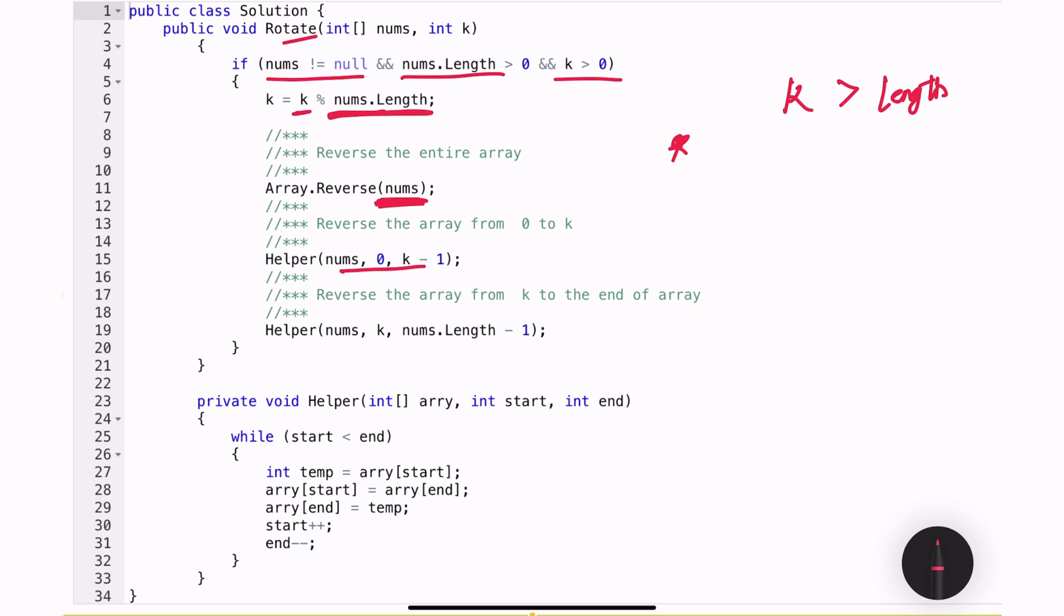After the complete array is reversed, the next step is to reverse separate sections. I am breaking the array into two parts, the first one starting from zero all the way to k-1 index. So the first k elements and I will be calling this helper method passing these indexes. This helper method accepts an array, the start index and the end index and all it will do is reverse all the elements between the start and the end in that array. Once the helper method execution is complete, all the elements will be reversed.